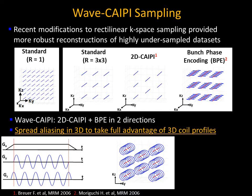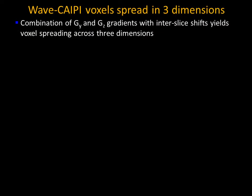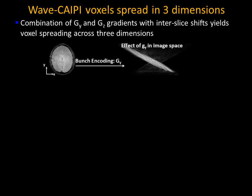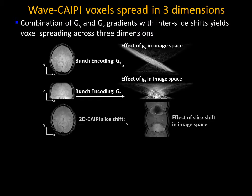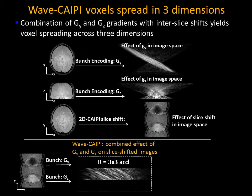Wave CAIPIRINHA is an efficient acquisition technique building upon 2D CAIPIRINHA and bunch phase encoding, where we play out sinusoidal gradients along Y and Z and couple that with a standard Cartesian readout along GX. Looking at the K-space coverage, we get helixes enabling efficient encoding of information. When coupled with a 2D CAIPIRINHA shift, we get very efficient encoding to highly accelerate and use parallel imaging for accurate reconstruction.